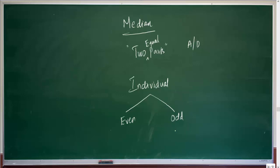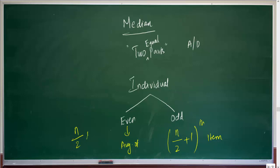When the number of observations are odd, median is the (n+1)/2th item. And if the number of observations are even, then median is the average of the (n/2)th and (n/2 + 1)th items.